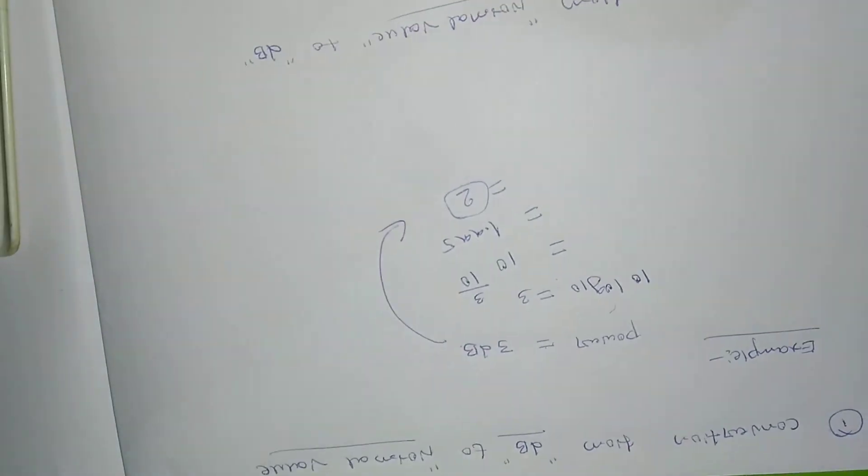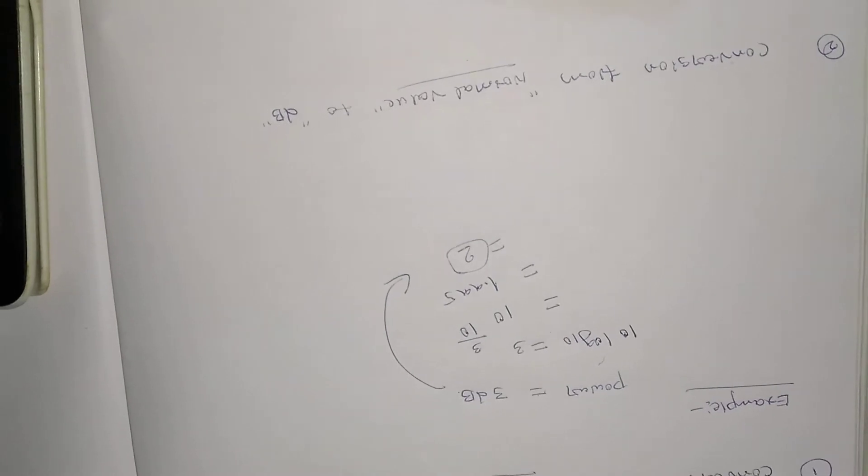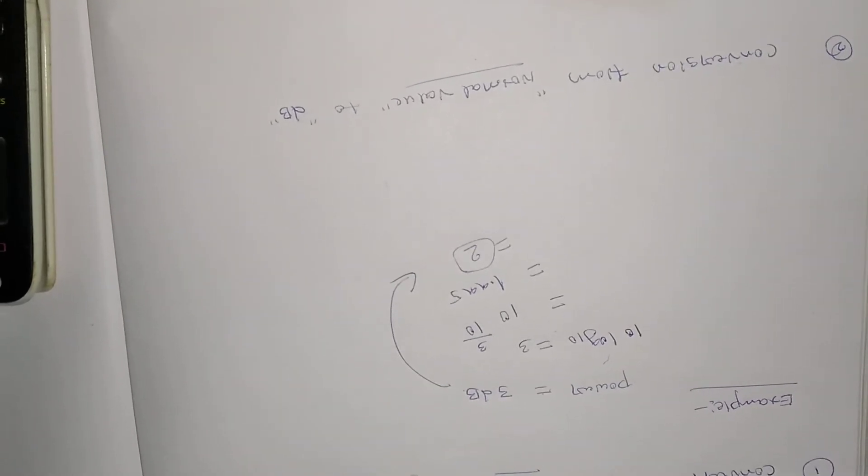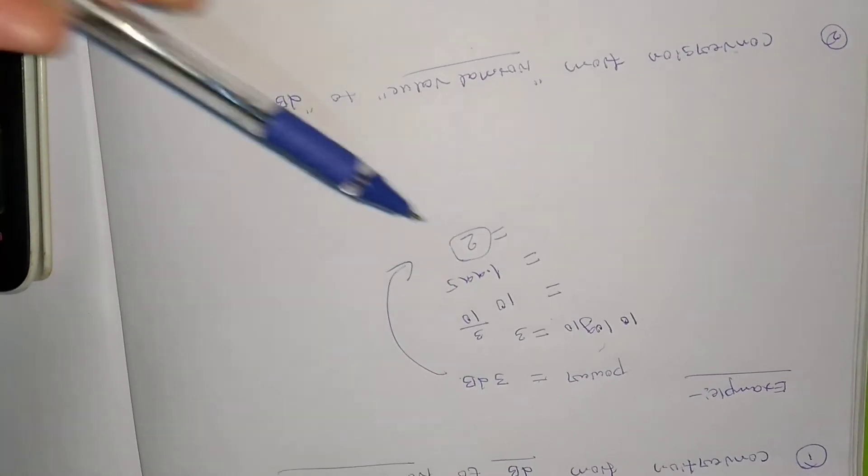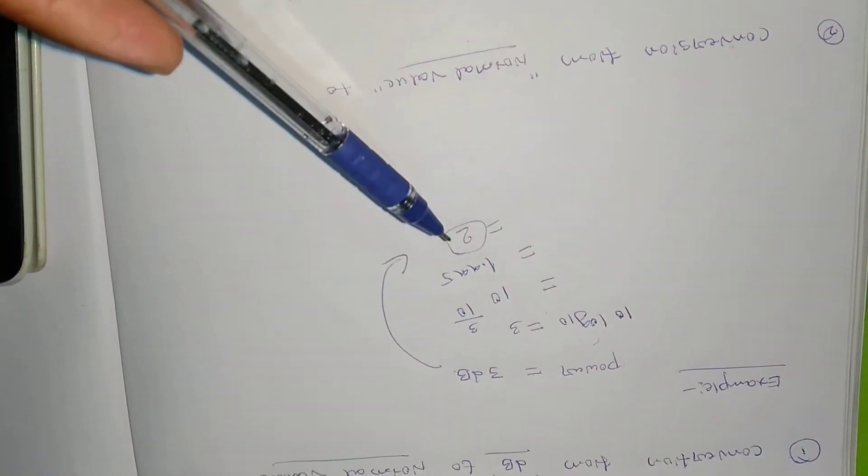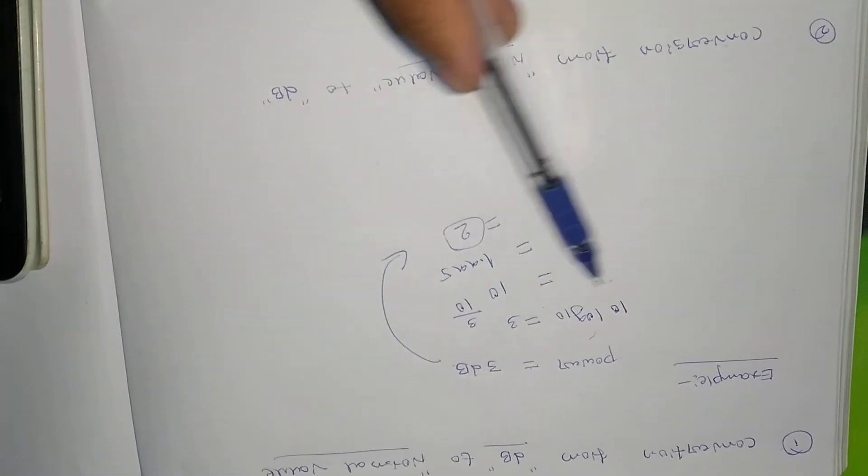Okay, so when you convert 3dB to the normal scale it will become 2. So why I am taking this one is because 3dB is a famous one. We'll be using 3dB frequently, so normally we know that the answer for that one is 2.